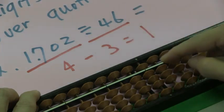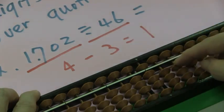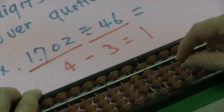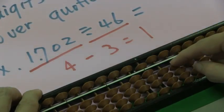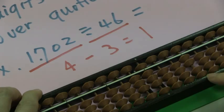8 times 4 is 36. Subtract 32. The remainder is 2.